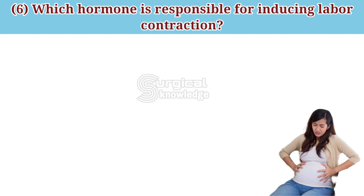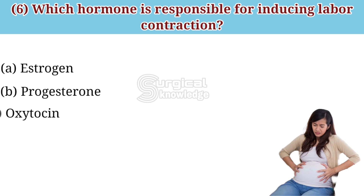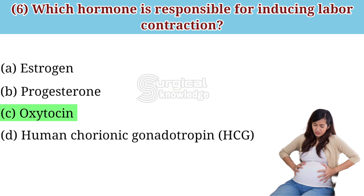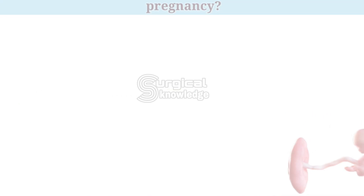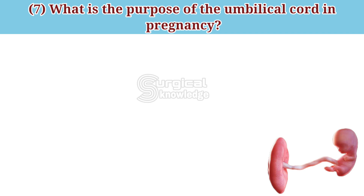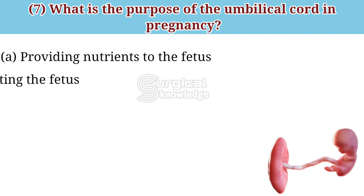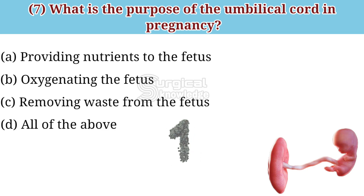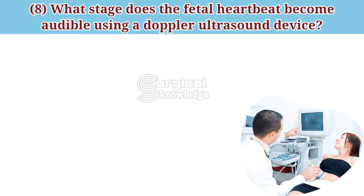Which hormone is responsible for inducing labor contractions? Options: estrogen, progesterone, oxytocin, human chorionic gonadotropin. The correct answer is oxytocin. What is the purpose of the umbilical cord in pregnancy? Options: providing nutrients to the fetus, oxygenating the fetus, removing waste products from the fetus, all of the above. The correct answer is all of the above.